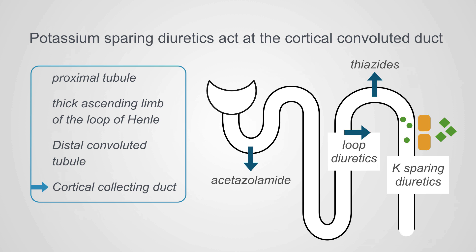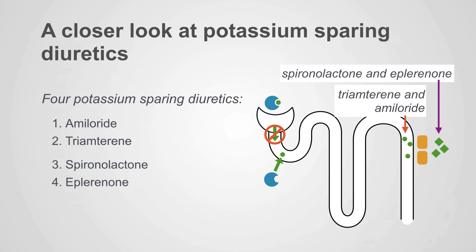Moving on to the potassium-sparing diuretics, these are active in the cortical collecting duct. There are four types: amiloride, triamterene, spironolactone, and eplerenone. The first two — amiloride and triamterene — are active in the tubular fluid like all other diuretics, and because they are protein-bound, they must be secreted in the proximal tubule. The last two — spironolactone and eplerenone — are the only diuretics that reach their active site via the bloodstream and do not need to go through the tubular fluid.